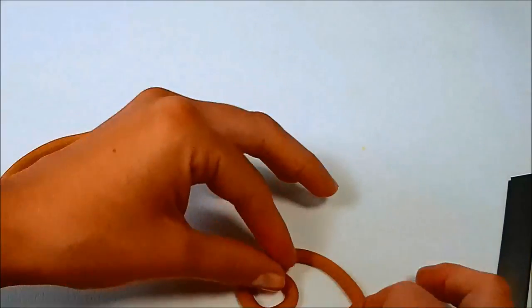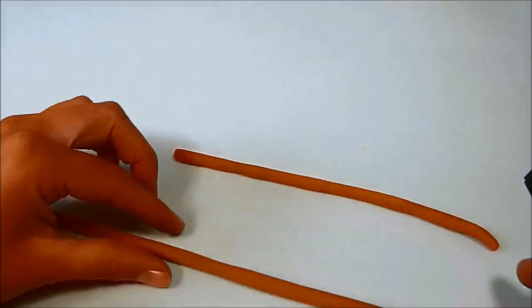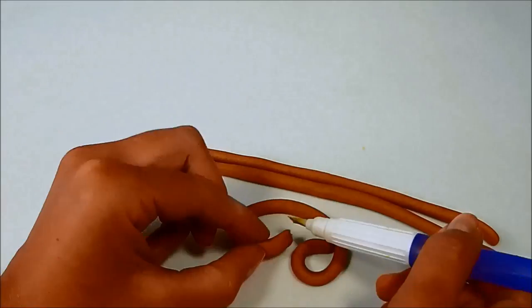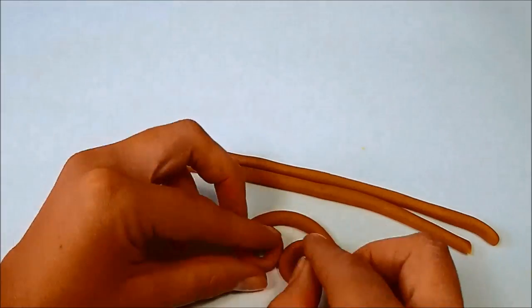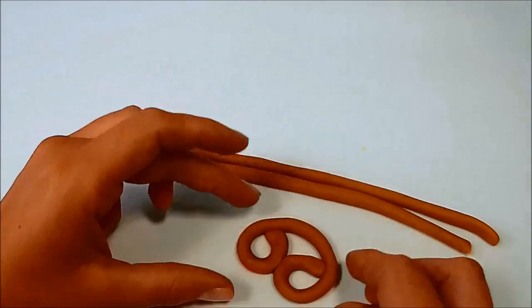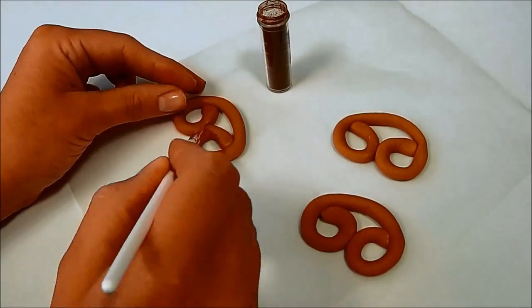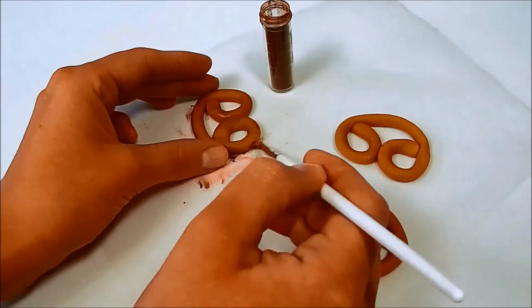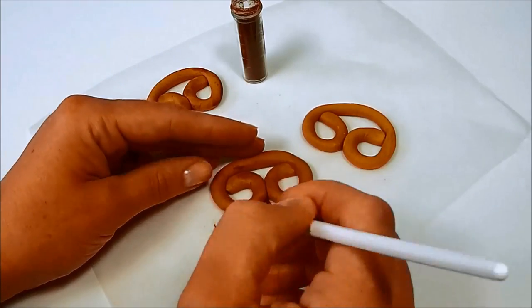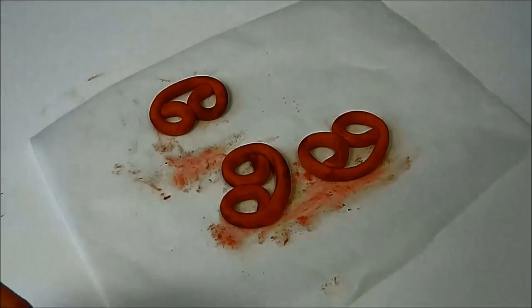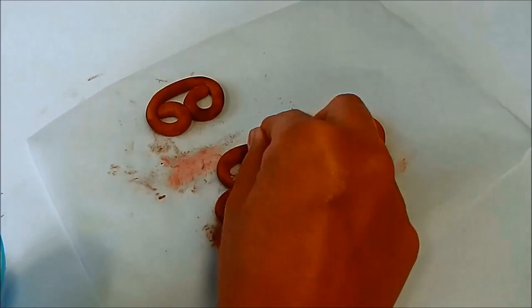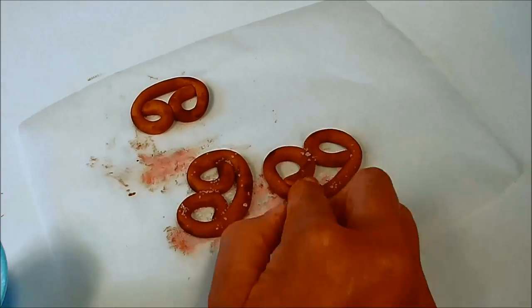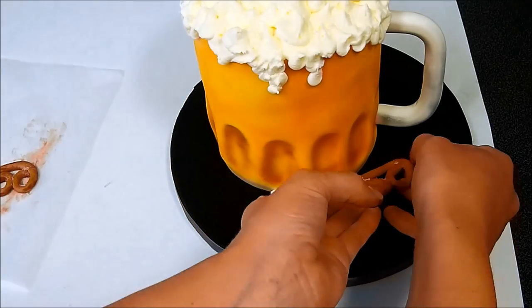And now for the decoration I'm making pretzels from brown fondant. I'm rolling three pieces of brown fondant the same length and giving them a pretzel shape. To make them look more real I'm dusting them with brown fondant color and I'm adding to them small pieces of sugar. Now I'm just using some water to stick them to the cake board.